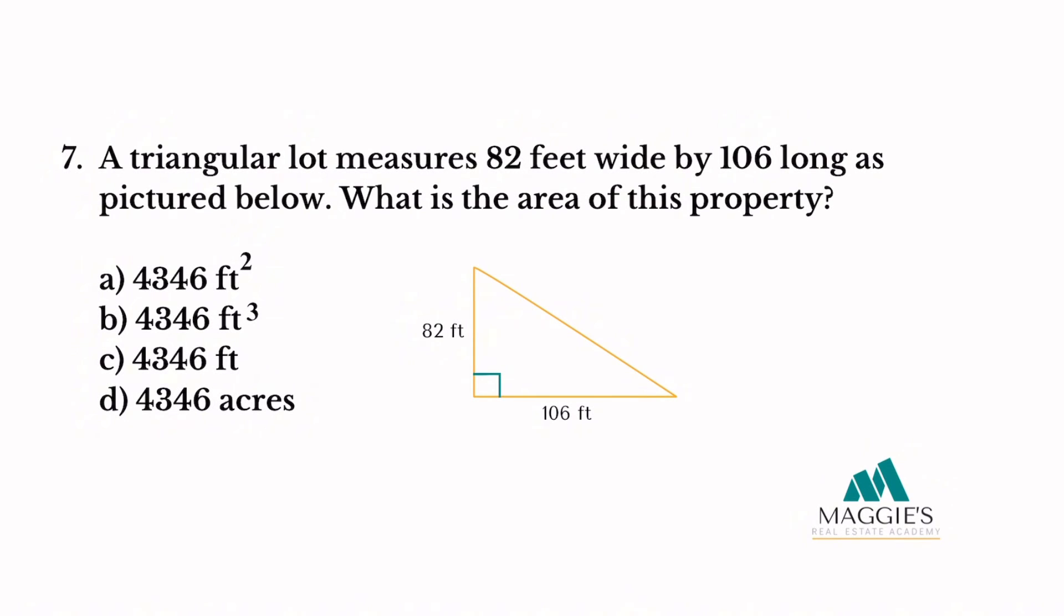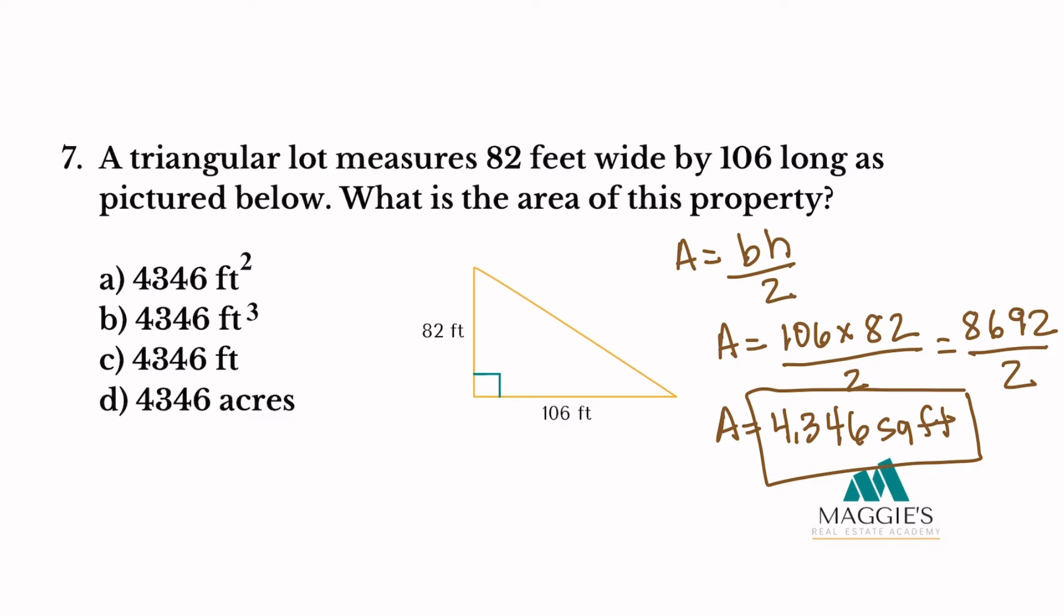Number 7: A triangular lot measures 82 feet wide by 106 feet long as pictured below. What is the area of this property? For this example, remember the area formula for a triangle is base times height divided by 2. In this example, I'm going to choose the base of 106 and the height of 82. I'm going to multiply those two first, then divide by 2. So 106 times 82 equals 8,692 and then divide it by 2. So my total area for this triangle is equal to 4,346 square feet. So my answer to this question is A. Remember, it could be written as square feet or feet squared.